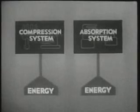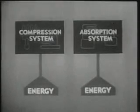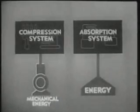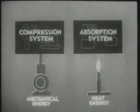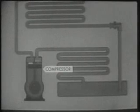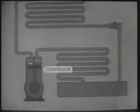There are two principal refrigerating systems: the compression system and the absorption system. The basic difference between them lies in the source of the energy that drives them. The compression system operates on mechanical energy produced by a motor-driven compressor. The absorption system uses heat energy supplied by a flame or some other source of heat. The compression system, activated by a compressor, will be described first. It is divided into the high and low pressure sides. The high pressure side is that portion of the system through which the refrigerant travels under high pressure.